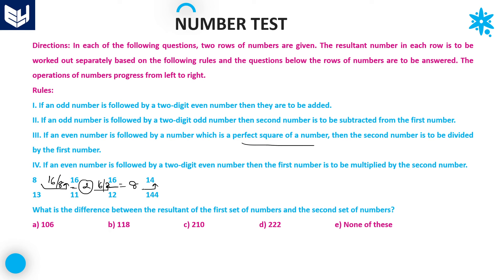Now 8 is an even number followed by 14, a two-digit even number. Rule 4: both are multiplied — 8 into 14 equals 112. Therefore, the resultant of the first set of numbers is 112.